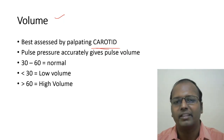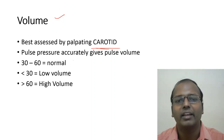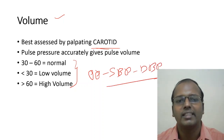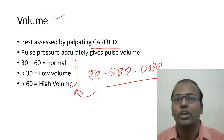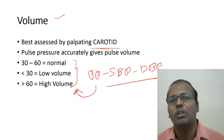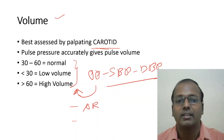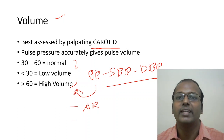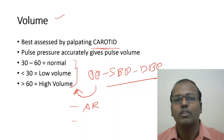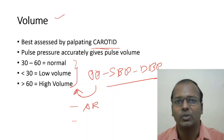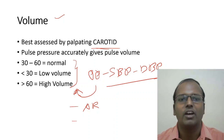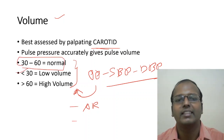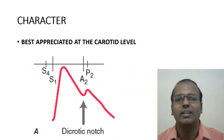Volume is best assessed by palpating the carotid, though it comes with experience. An indirect assessment is by calculating pulse pressure — systolic minus diastolic blood pressure. Normal pulse pressure is 30 to 60 mmHg. Less than 30 suggests low volume pulse; more than 60 suggests high volume pulse. High volume pulse occurs in aortic regurgitation and arteriosclerosis. Decreased pulse volume occurs in aortic stenosis or mitral stenosis where output is restricted by the valvular lesion.